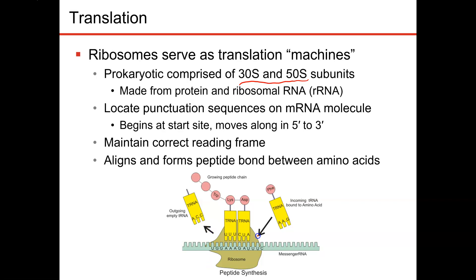You can see those here. This part here would be that large subunit, and then down here, small. They come together on the messenger RNA, and then they start allowing the transfer RNAs to come in with the proper amino acids.